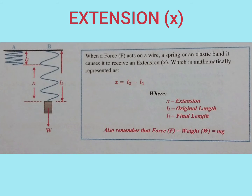Whenever a tensile or a stretching force acts on a wire, a spring or an elastic band, it causes it to receive an extension, which is denoted by the symbol X. This can be mathematically represented as X is equal to L2 minus L1, where X is the extension, L1 is the original length of the spring, and L2 is the final length of the spring.